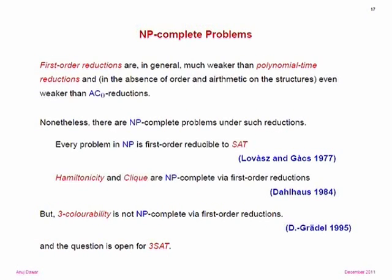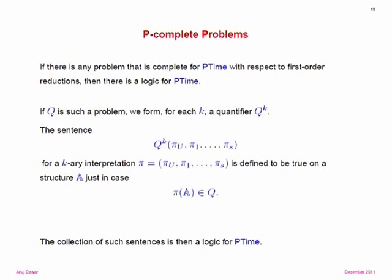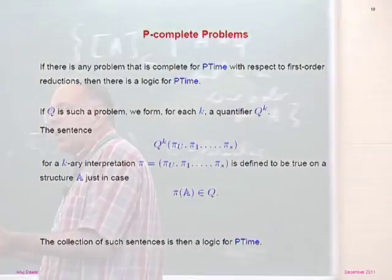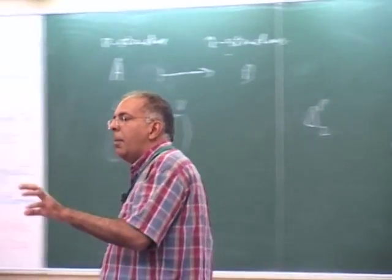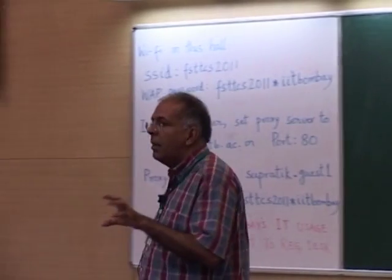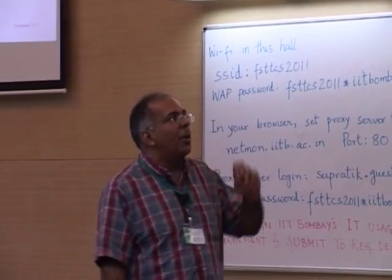We'll hear more about 0-1 laws in Ben Rossman's talk tomorrow. The landscape of what's NP-complete under first-order reductions is interesting. What about P-completeness? First-order reductions are very weak. It's a natural thing to ask: is there a problem that's complete for P time with respect to first-order reductions?